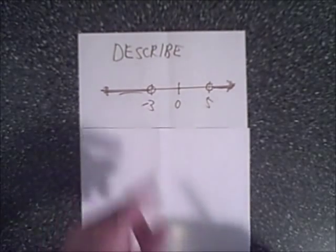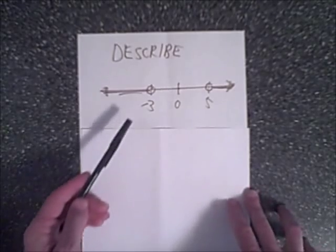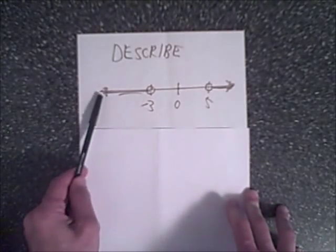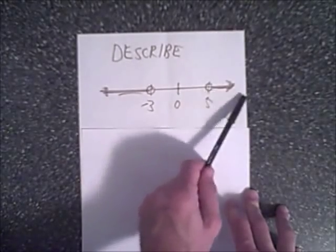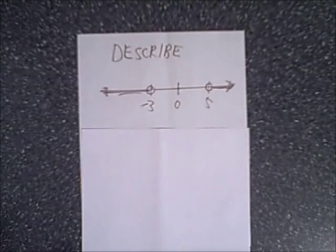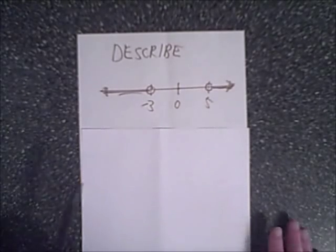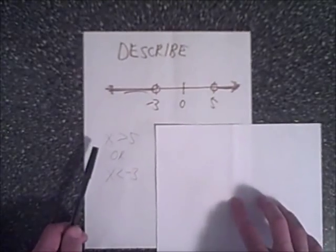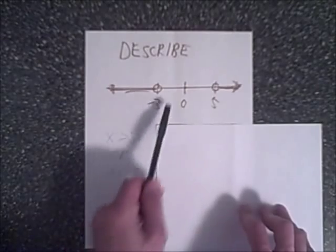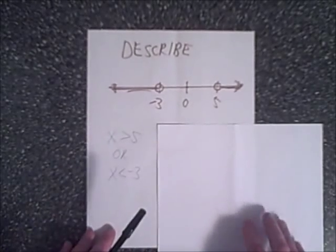Then the next example, we have a number line graph. And again, there's an open circle at negative 3, and then going on down, and an open circle at 5, and going on up. So we're looking for less than negative 3, greater than 5. And the obvious direct inequality we could use is simply x is greater than 5, or x is less than negative 3. And everything in between would not fit either one of these possibilities.